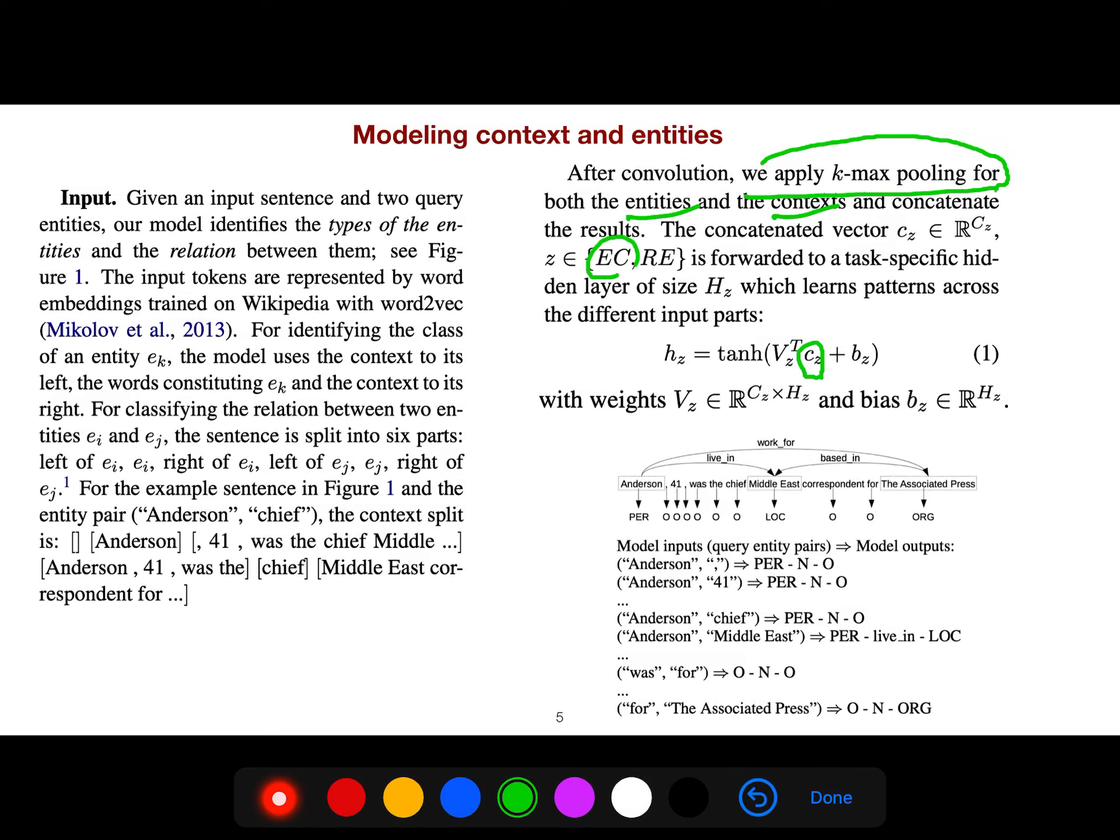The concatenated vector c(z), where z is either entity classification or relation extraction, is forwarded to a task-specific hidden layer which learns patterns across different input parts.